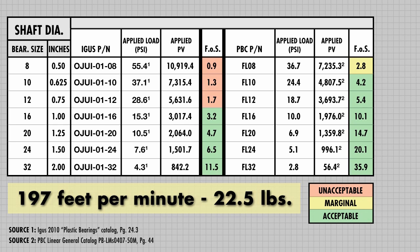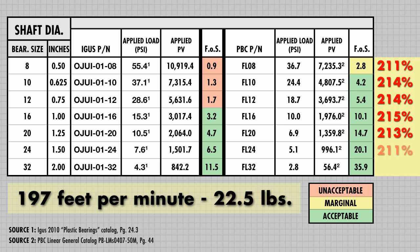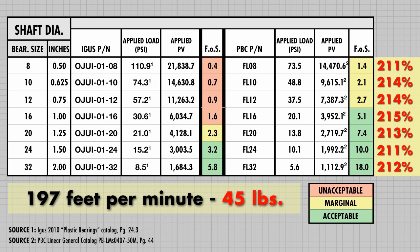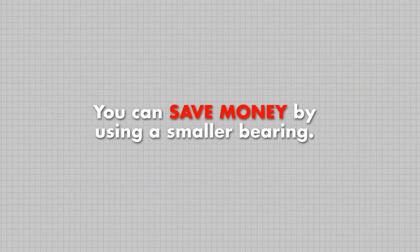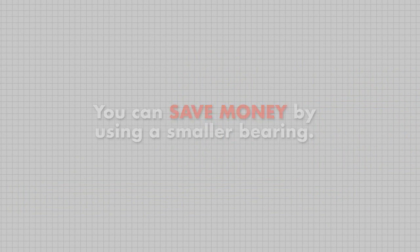As a general rule of thumb, engineers typically choose a factor of safety of at least three for bearing applications. Anything over three will be shown in green, below two in red, and everything in between in yellow. For this example, the simplicity bearings have a factor of safety approximately three times as great as the equivalent igus bearing — a 200% increase. No matter what the applied load and velocity are, the results remain constant with an approximate 200% increase in factor of safety. This means you can save money by using a smaller bearing.